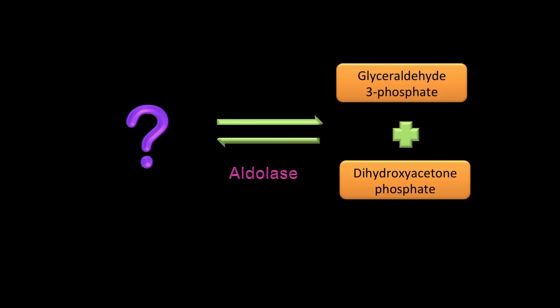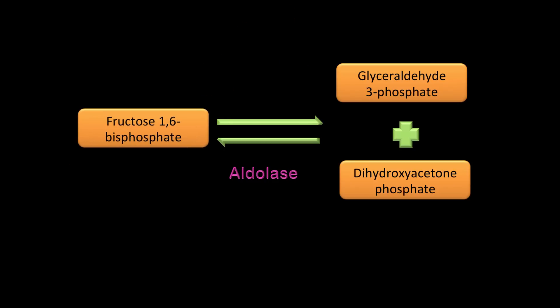Two products for the price of one here. What is that substrate? Correct — fructose-1,6-bisphosphate. It has six carbons, and those six carbons are split into two three-carbon molecules: glyceraldehyde-3-phosphate and dihydroxyacetone phosphate. The enzyme catalyzing the reaction is aldolase.